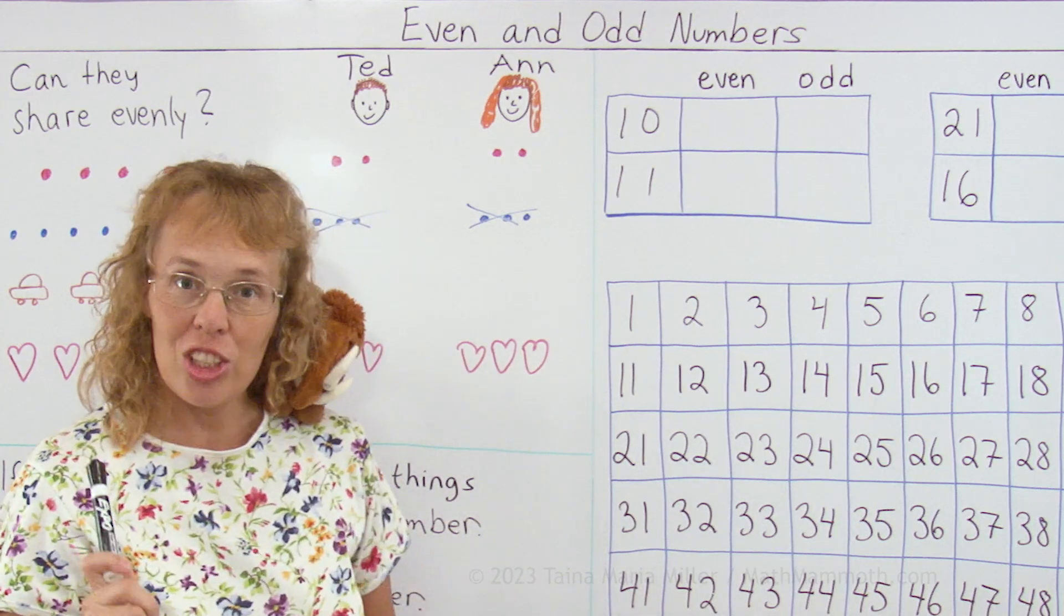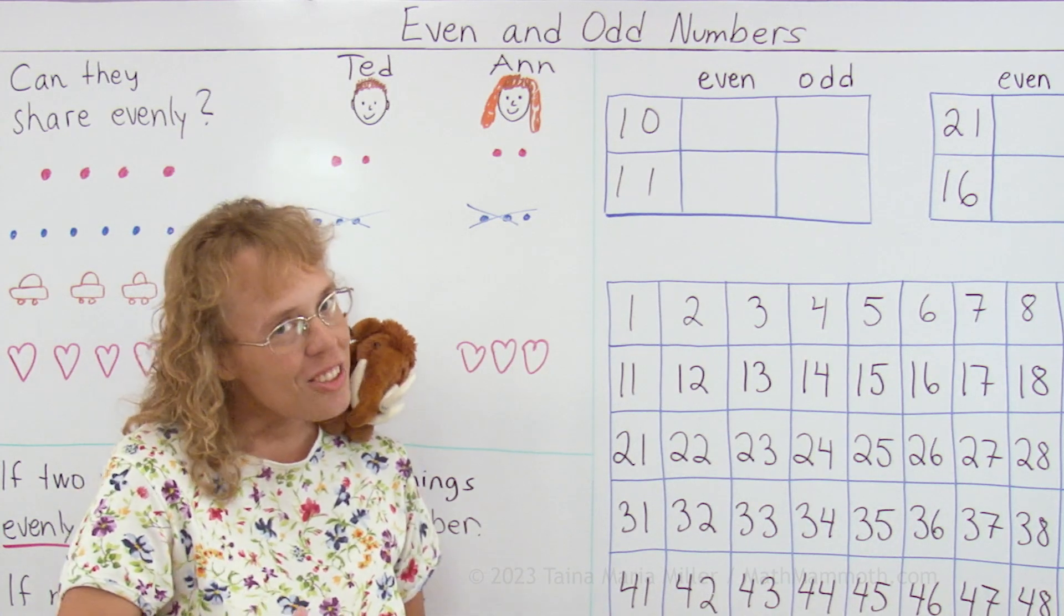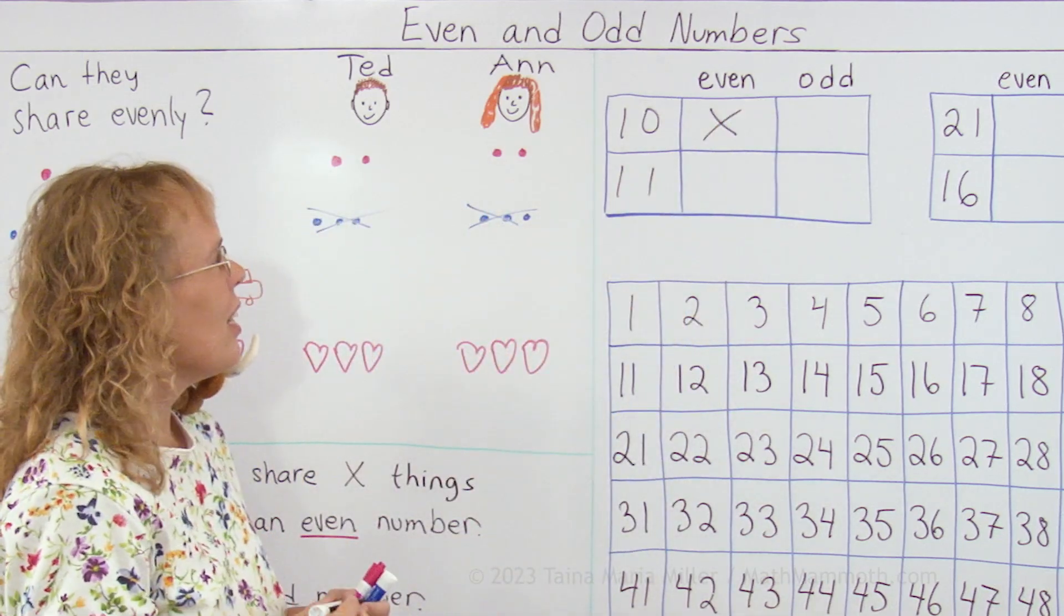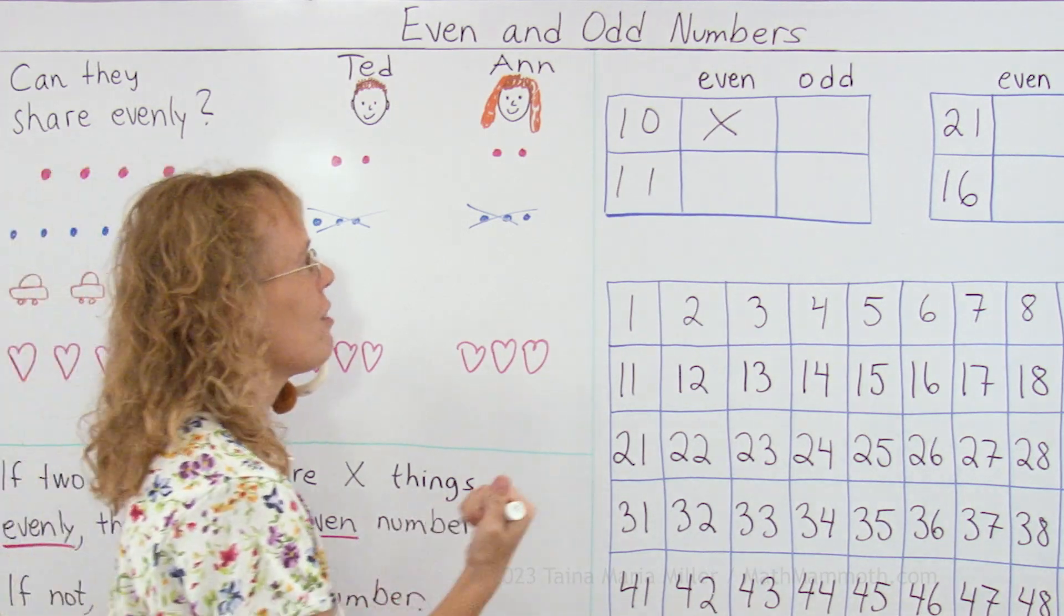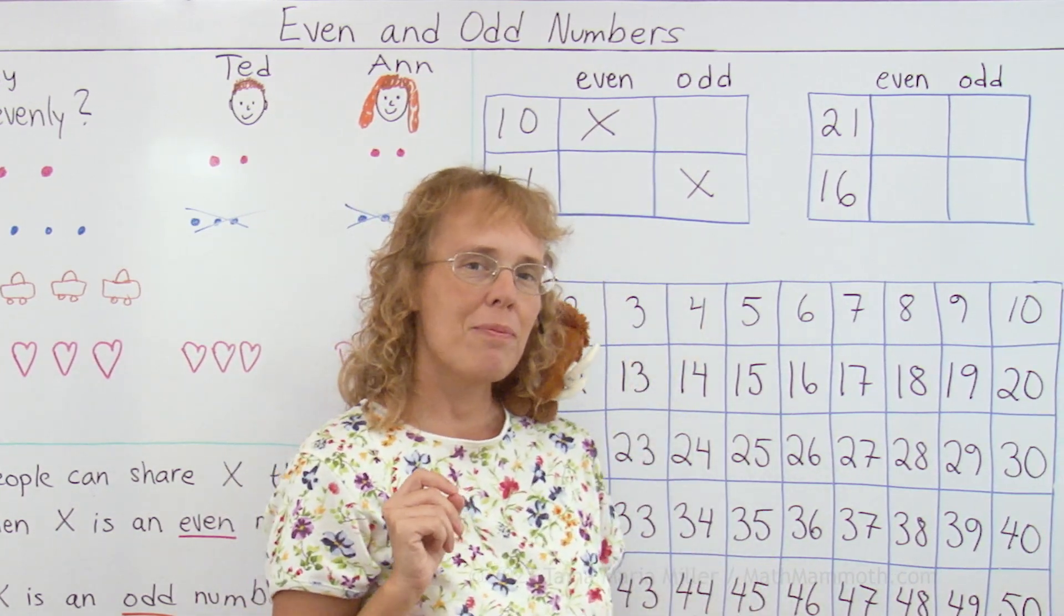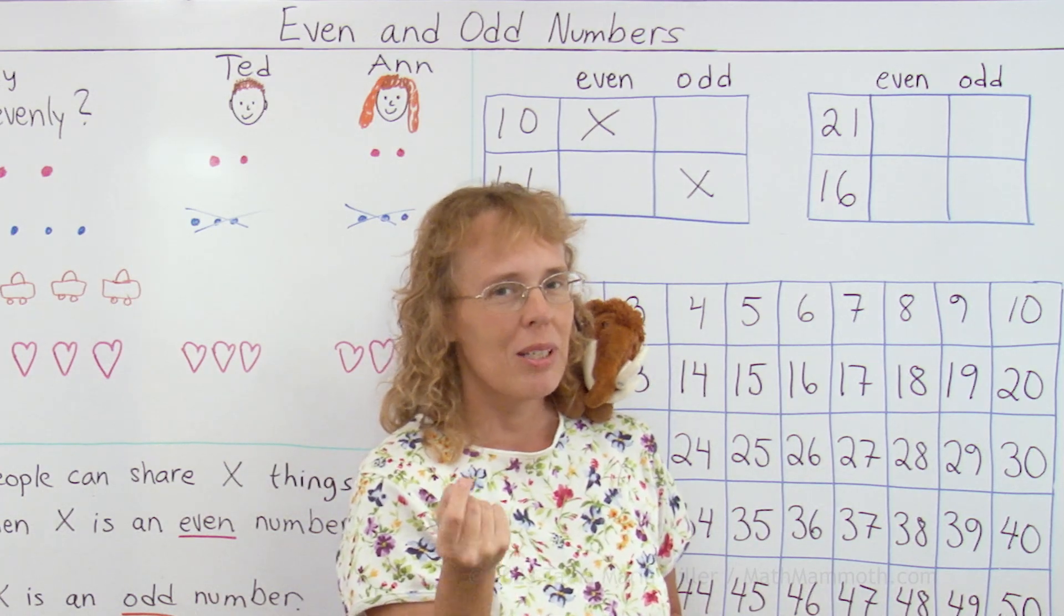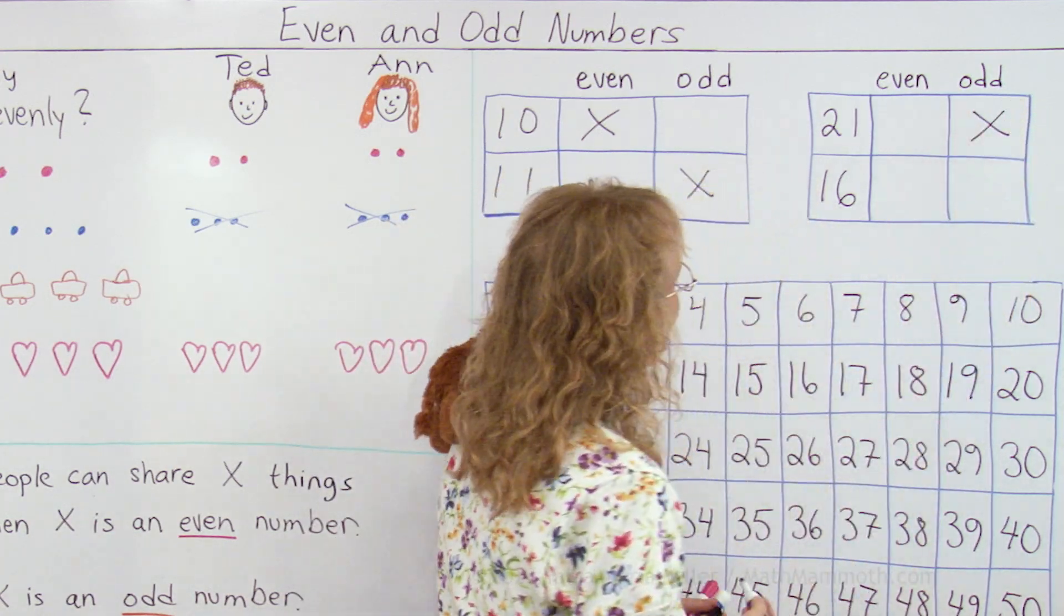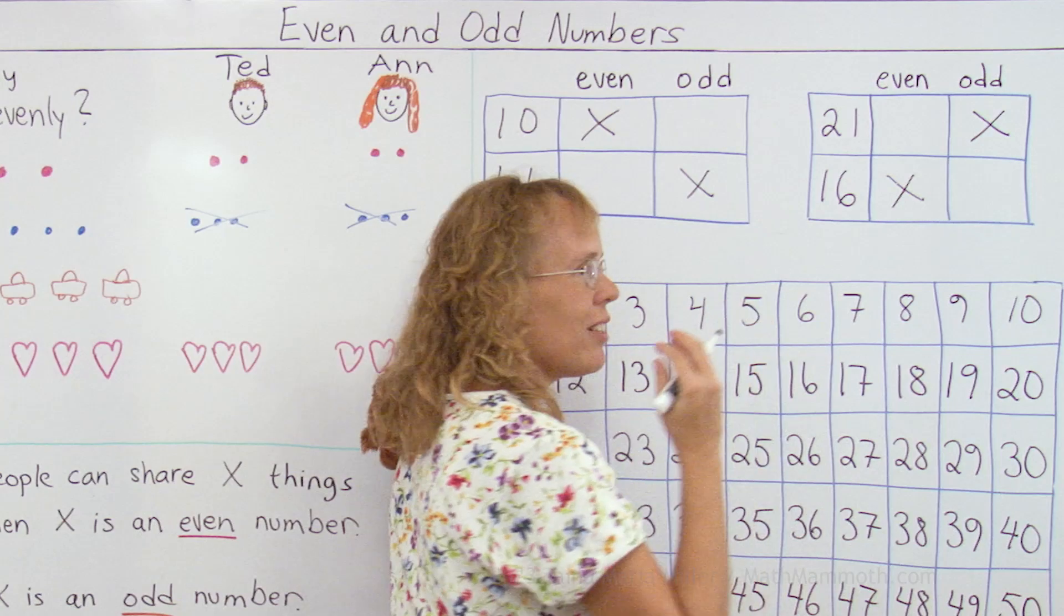Is 10 an even or odd number? If you have 10 things, can you share evenly with your friend? Yes, you can, because you can have five and five. So it's an even number. How about 11? Well, 11 is just one more than 10. 10 you could share evenly, but if you have one more than that, then you cannot share evenly. You would have one left over. How about 21? Is it an even or odd number? 20 you can share evenly, right? It would be 10 and 10. But 21, again, you cannot. It would have one left over. So it's an odd number. And then 16, it's an even number, because you would have 8 and 8.